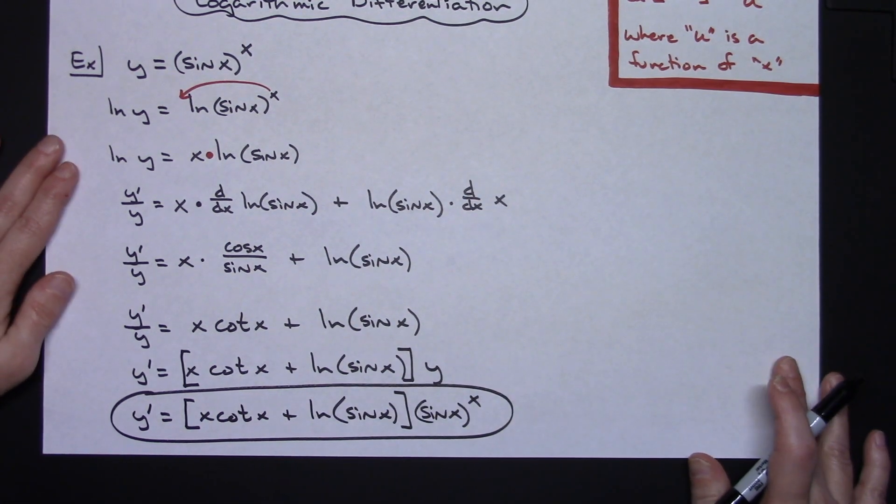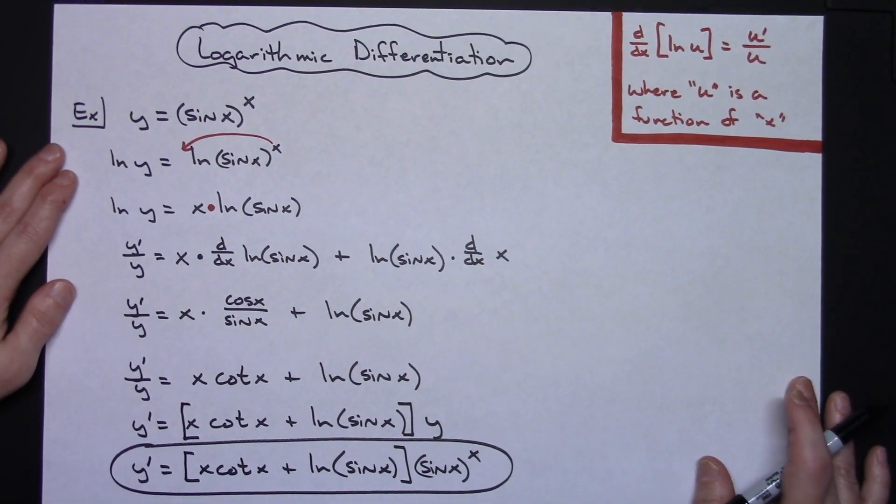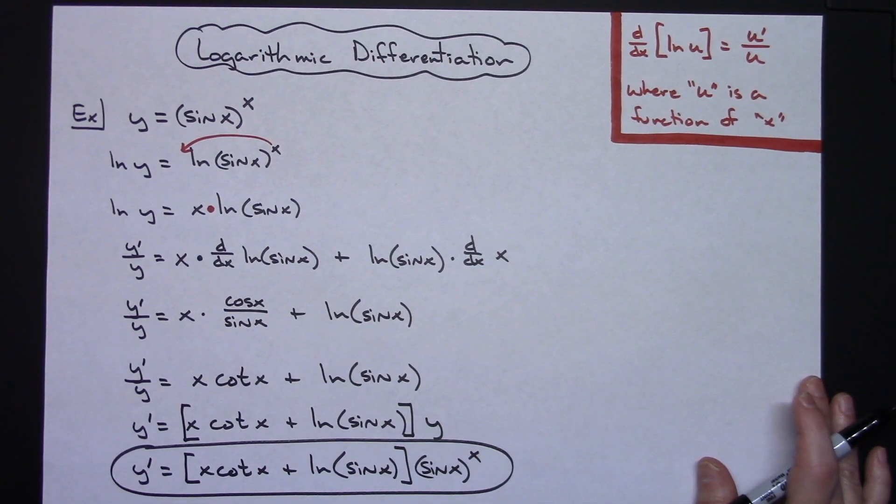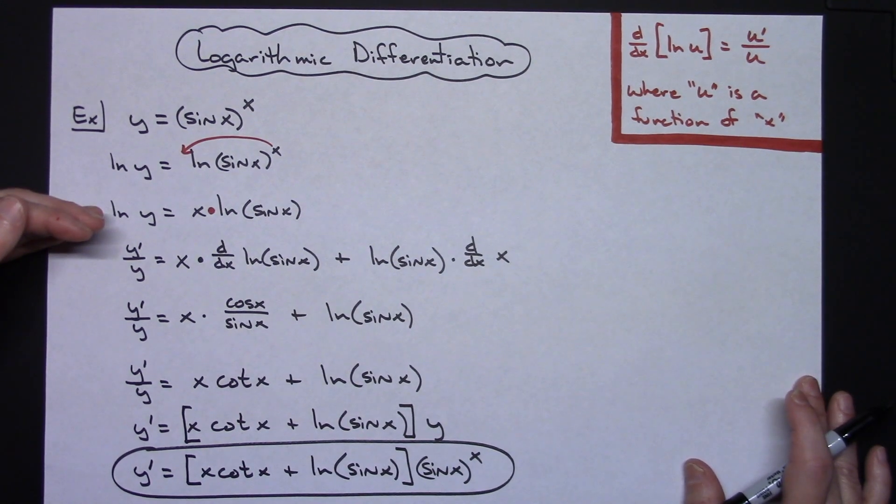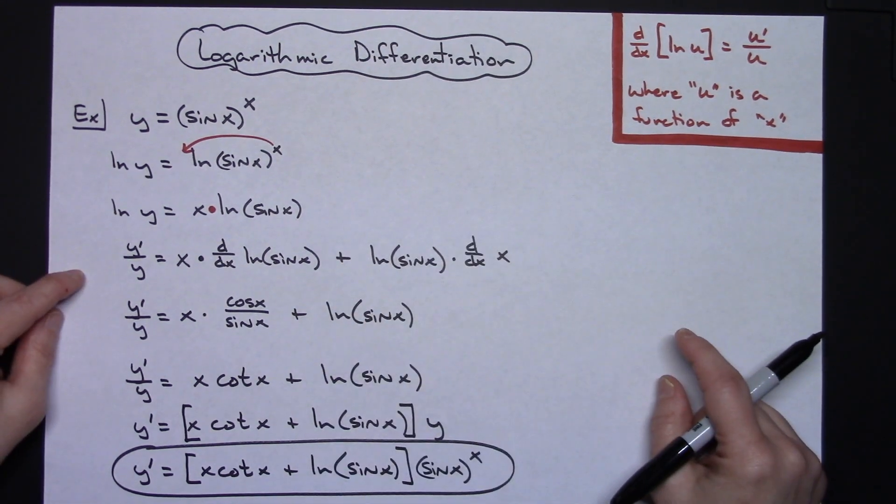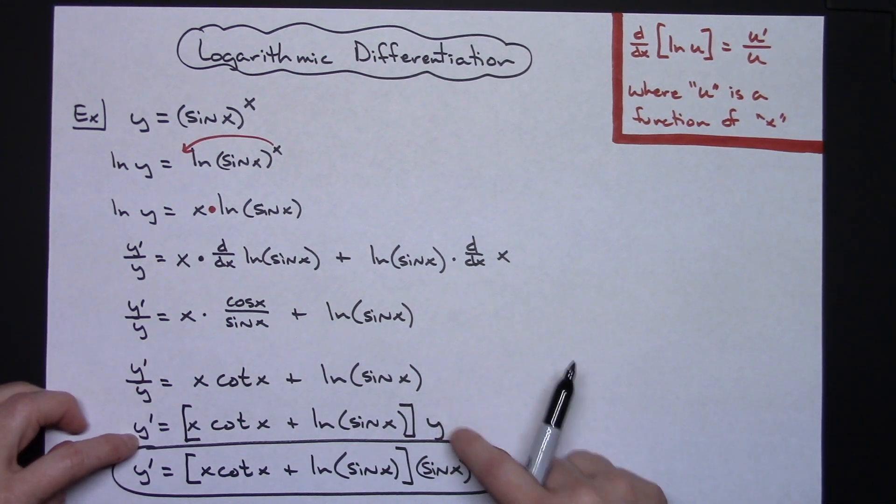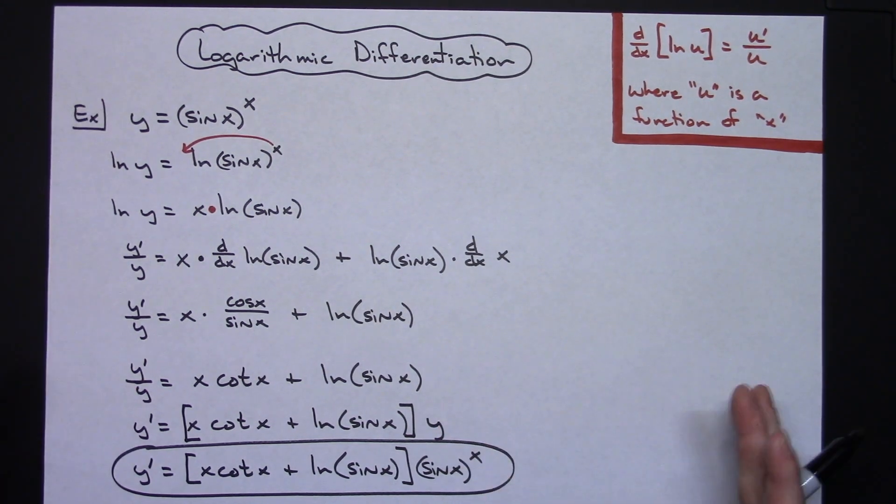So there you have pretty straightforward logarithmic differentiation on this example. It's a certain set of steps: take the log of both sides, implement some log rules to simplify that expression, take the derivative of both sides of the equation, and then ultimately solve for y prime and replace y with whatever it equals. Those are your general overall steps for logarithmic differentiation.